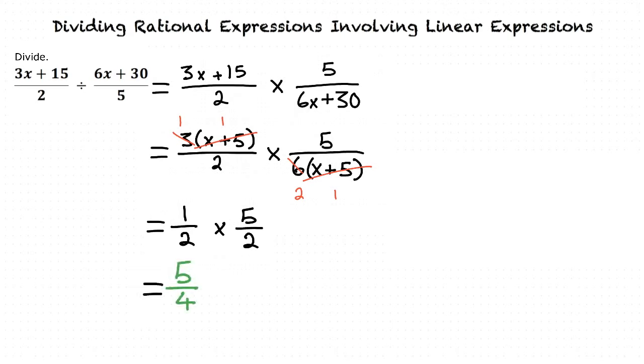So let me get this straight. We begin by finding the reciprocal of the fraction we are dividing by, which is the numerator and denominator flipped. We then factor out as much as we can to cancel out the common factors between the two fractions. Then we multiply like a regular fraction multiplication problem to get the answer. That is correct.